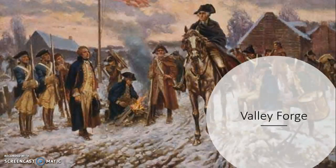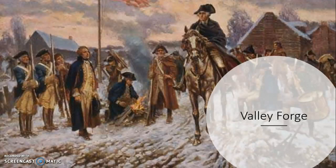Valley Forge was a very long, harsh winter at the Continental Army's camp in Pennsylvania, between 1777 and 1778. There was very little money in the Continental Army and soldiers were trying to survive in extremely harsh conditions. Thousands of soldiers actually died at the camp. Washington emerged as a hero by using the limited funds he had to help as many troops as he could.